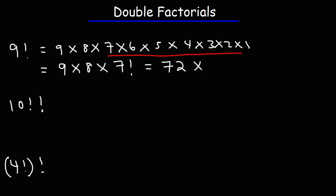9 times 8 is 72. And early in this video, we calculated 7 factorial, which we found it to be 5,040. So 5,040 times 72, that's equal to 362,880. So that's the value of 9 factorial.